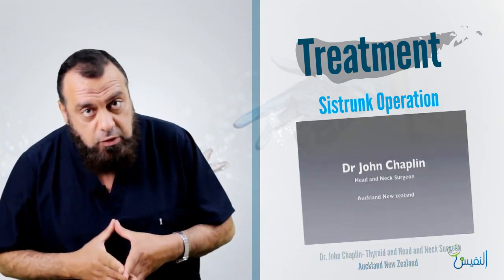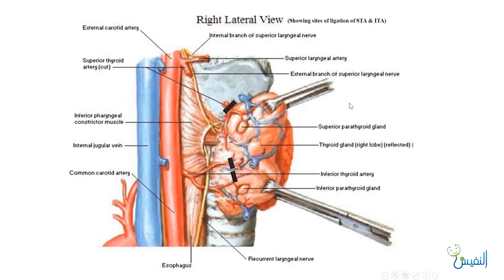Regarding the nerves related to the thyroid, the inferior thyroid artery supplies both parathyroid glands and gives branches to the trachea, pharynx, and oesophagus. The superior laryngeal nerve gives the internal laryngeal nerve, which is sensory to the upper part of the larynx, while the lower part is supplied by sensory branches of the recurrent laryngeal nerve. The external laryngeal nerve supplies the cricothyroid muscle, while all other muscles of the larynx are supplied by the recurrent laryngeal nerve.